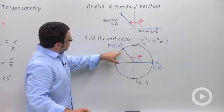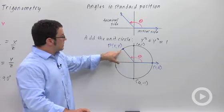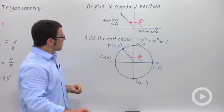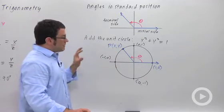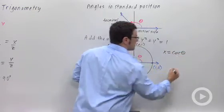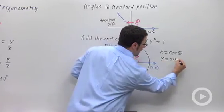Same angle. We want to mark the point where the terminal side intersects the unit circle. That point will have coordinates x, y. We define cosine to be the x value and sine to be the y value.